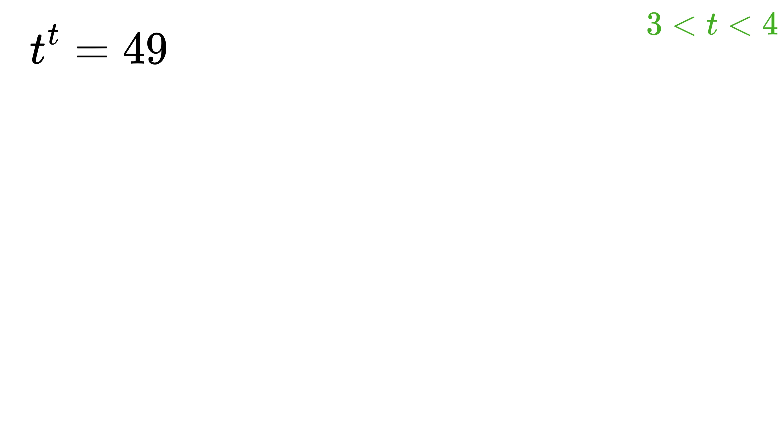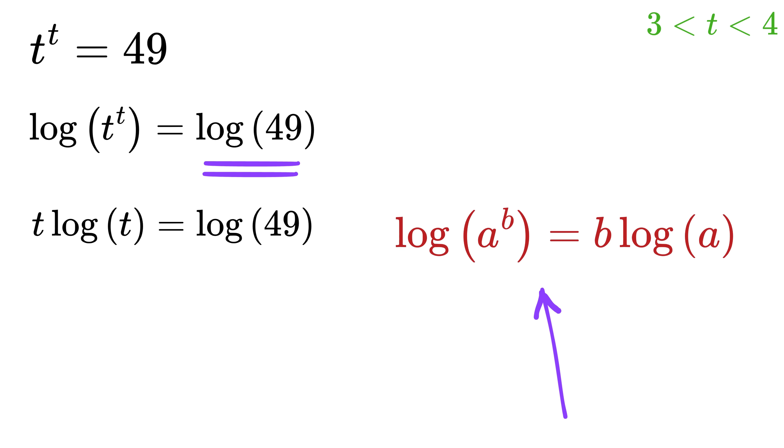Now let us try to solve it using algebra. First, let us apply the natural logarithm on both sides. Some people call natural logarithm ln, but I will call it log. This gives us log of t raised to t equals log of 49. Now, using the power rule of logarithms, we can rewrite this as t times log of t equals log of 49.